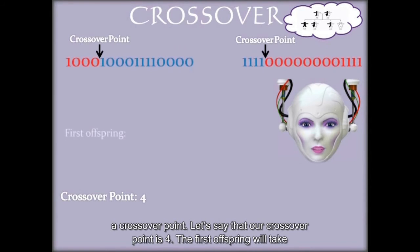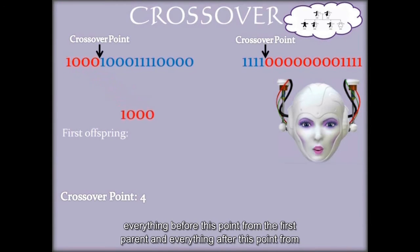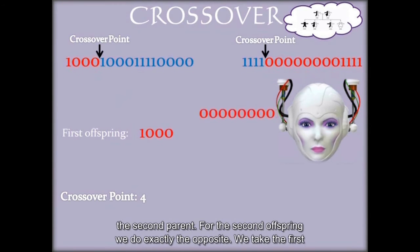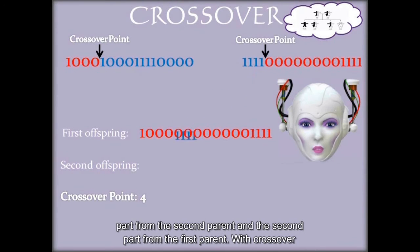The first offspring will take everything before this point from the first parent and everything after this point from the second parent. For the second offspring we do exactly the opposite. We take the first part from the second parent and the second part from the first parent.